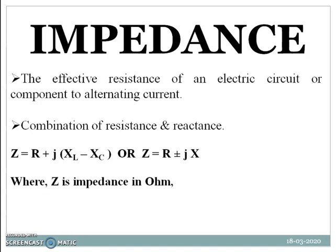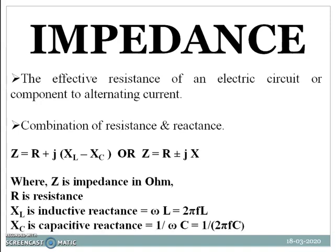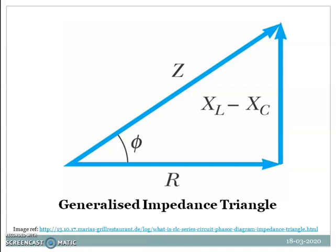All three parameters are measured in ohms. R is resistance, X_L is inductive reactance (omega L), and X_C is capacitive reactance (1 upon omega C or 1 upon 2 pi FC). The impedance triangle is a right-angle triangle whose base is resistance, whose height is reactance, and whose hypotenuse is impedance. Phi is the angle between R and Z.